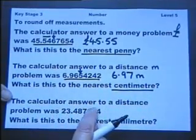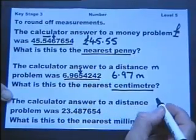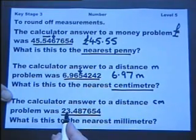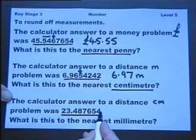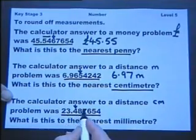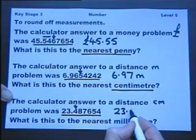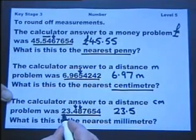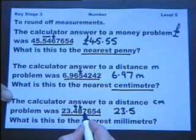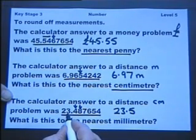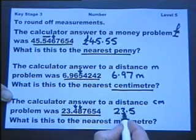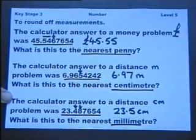Let's look at another calculator answer on distance. Suppose we're working in centimetres. The calculator answer is saying 23 and a fraction of a centimetre. When working in centimetres, the decimal part tells us how many millimetres. So it's 23 centimetres and 4 millimetres, but we round it up to 5 millimetres. 23.5 centimetres is the answer to the nearest millimetre.